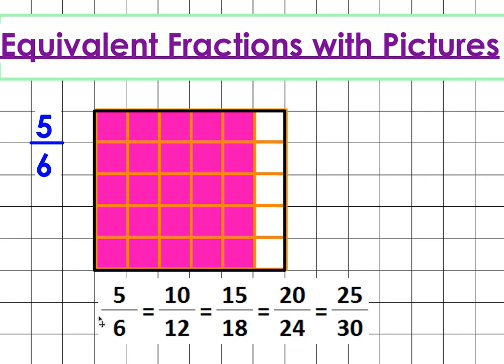And similarly, the denominator, the bottom row, each time we add an extra six squares, each time we add another row. So each time we're adding an extra six. So our denominator is going to go up in sixes. 6, 12, 18, 24, 30. And this is how we can find equivalent fractions.